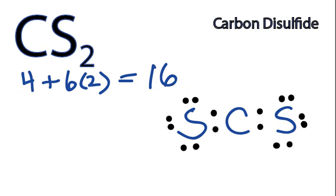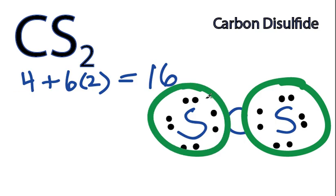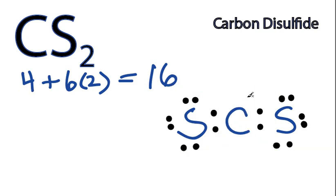Let's see if we have octets. 8 on that sulfur, 8 on that sulfur. Those have full outer shells, but in the middle, Carbon only has 4, so we've got to fix that.